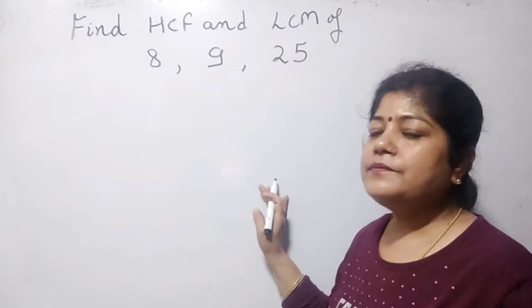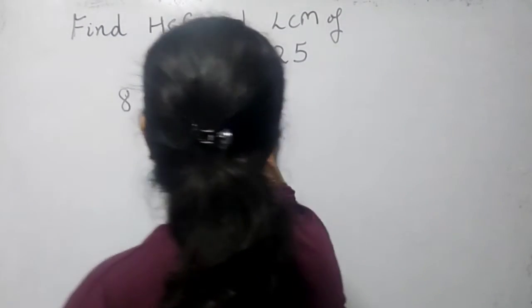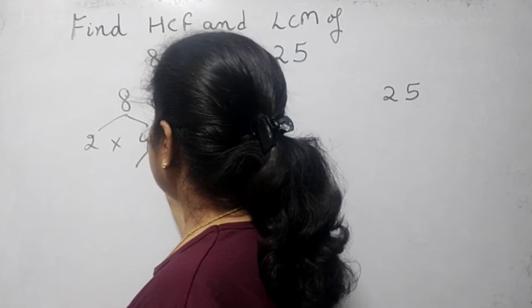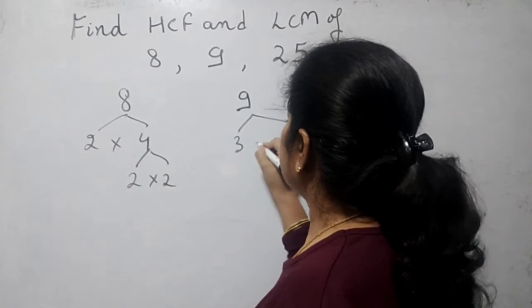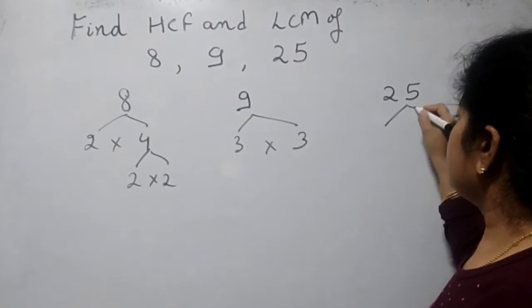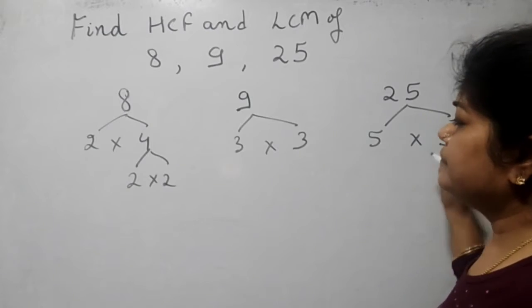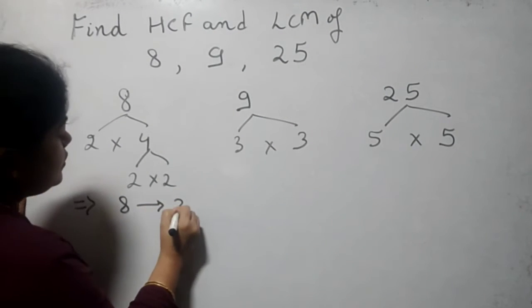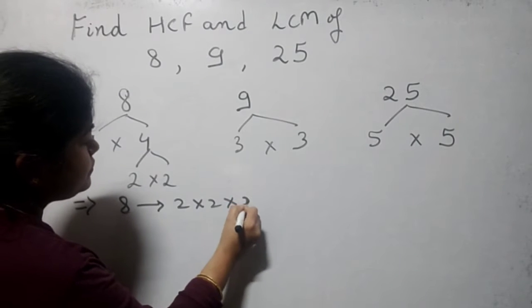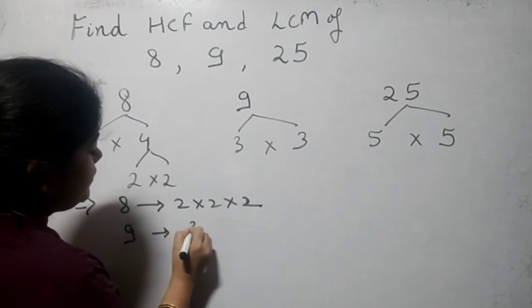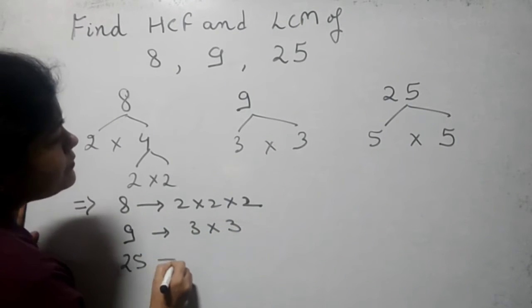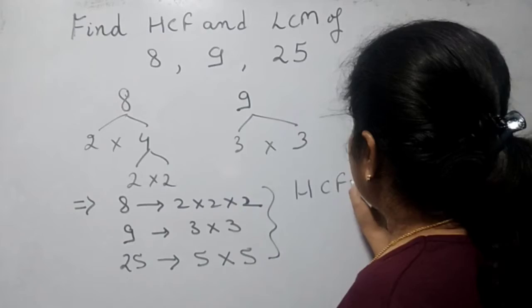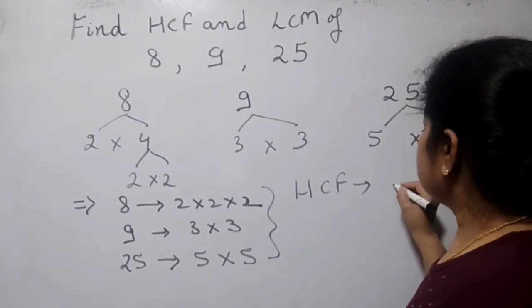I am just taking this sample. Find out the factor trees of 8, 9, and 25 one by one. For 8, we get 2 into 4, then again 2 into 2. For 9, we get 3 into 3 — this is the smallest prime number. For 25, we get 5 into 5. So the prime factors for 8 are 2×2×2, for 9 are 3×3, and for 25 are 5×5. Now if we have to find HCF, we can see that nothing is common in all three, so HCF is 1.